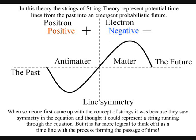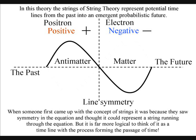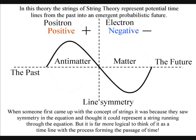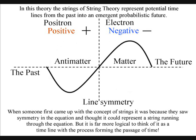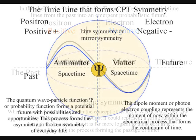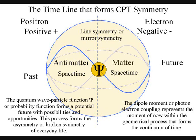Could the strings of string theory represent potential timelines from the past into the future? When someone first came up with the concept of strings, it was because they saw symmetry in the equation and thought it could represent a string running through the equation. But it is far more logical to think of it as a timeline.